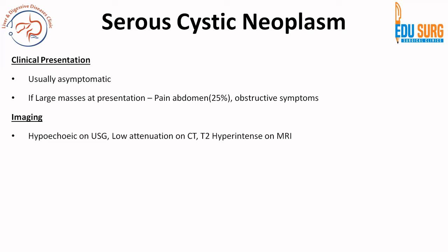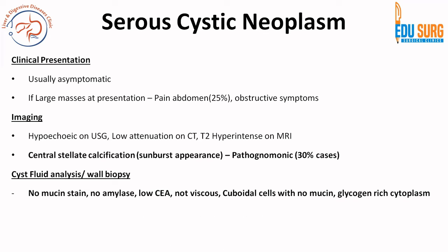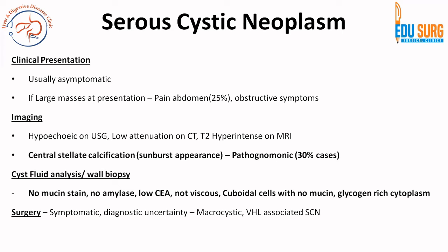To summarize imaging findings on different modalities: serous cystic neoplasm is hypoechoic on ultrasound, low attenuation on CT, and T2 hyperintense on MRI because of the fluid content. The central stellate calcification gives rise to a sunburst appearance, which is a commonly asked question. This is a pathognomonic pattern of serous cystic neoplasm but is seen in only 30% of cases. If cyst fluid analysis or wall biopsy is done — though it is classically not recommended if the lesion is clearly identified on imaging — there is no mucin stain, no amylase, low CEA, and it is not viscous. It will show squamous or cuboidal cells with no mucin and glycogen-rich cytoplasm.